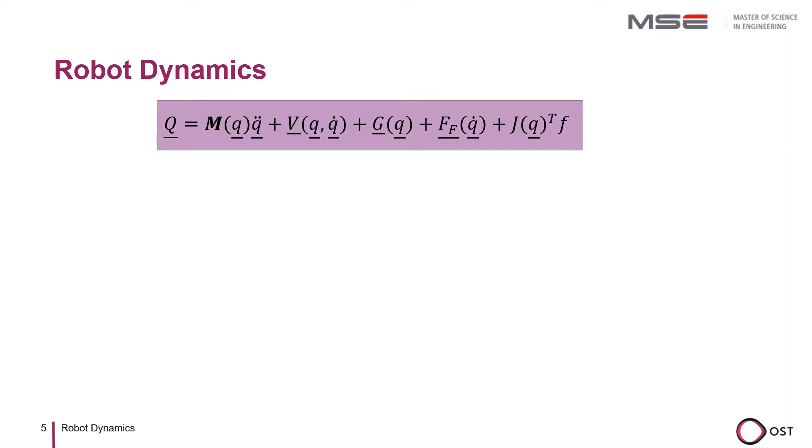Based on the considerations presented, I would like to show and explain the general dynamic equation of the dynamics of robots. The parameters and terms of this equation have the following meanings.